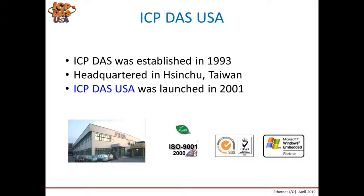ICP-DOS was established in 1993. Our headquarters is in Hsinchu, Taiwan, and ICP-DOS USA was launched in 2001 to support the North and South American markets. Our company is ISO 9001 certified, our products are RoHS compliant, and we're a Microsoft embedded partner.